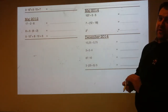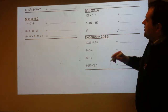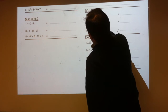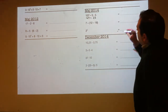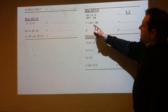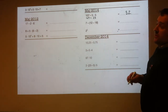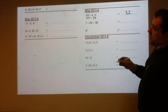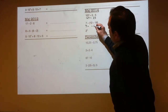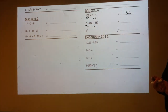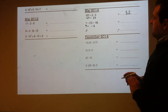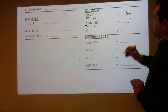107 minus 5 times 5. Do the 5 times 5 first: so that's 107 minus 25, which is 82. 7 minus (12 minus 18): do the bracket first, so that's 7 minus minus 6. Minus minus makes plus, so that's 7 plus 6, which is 13.